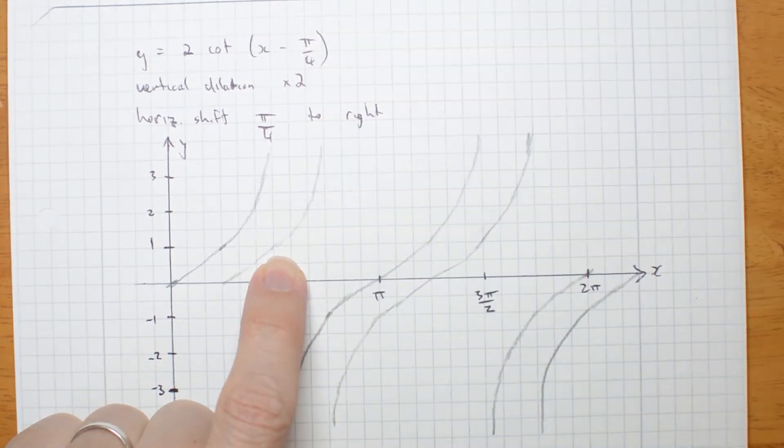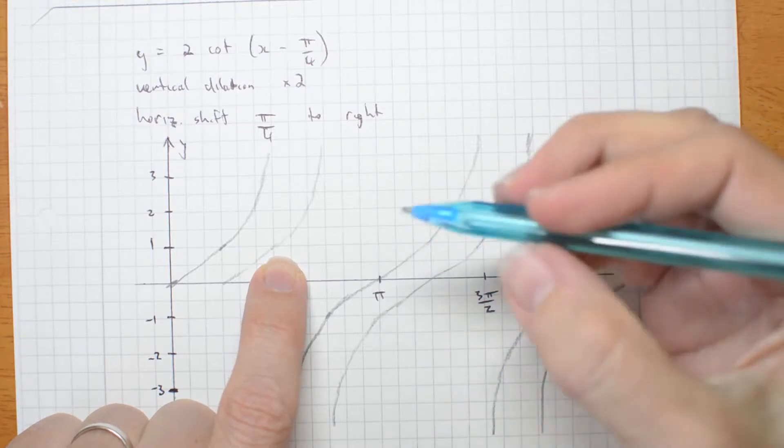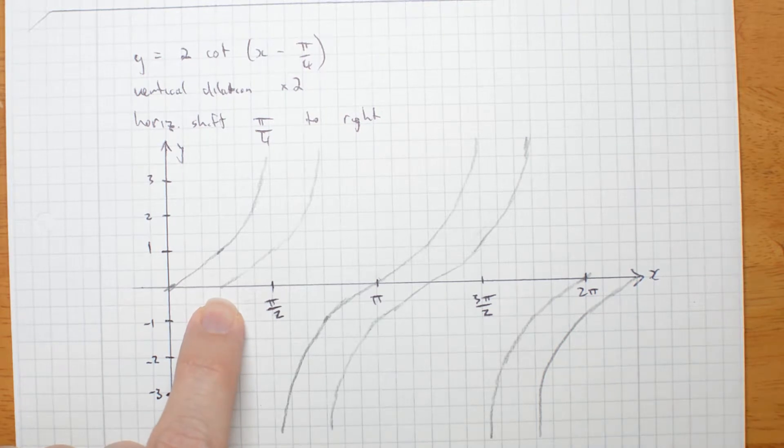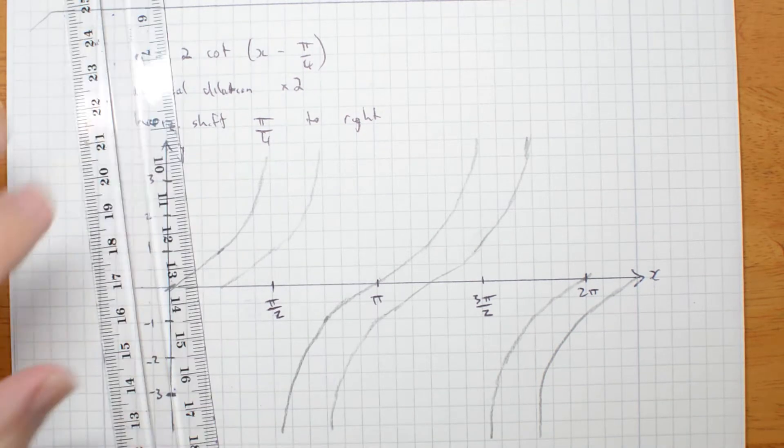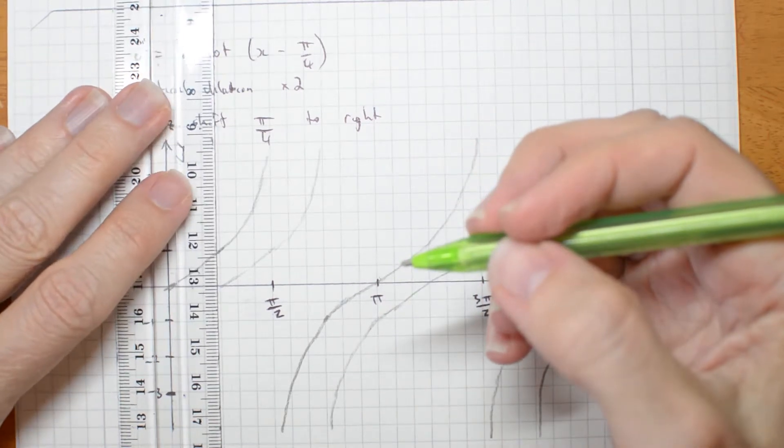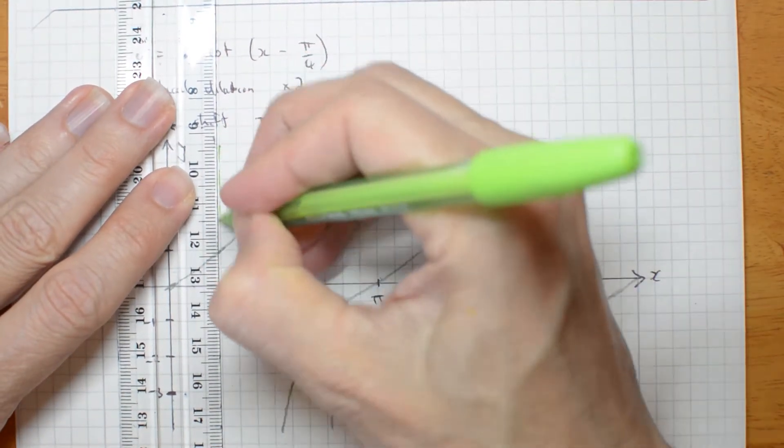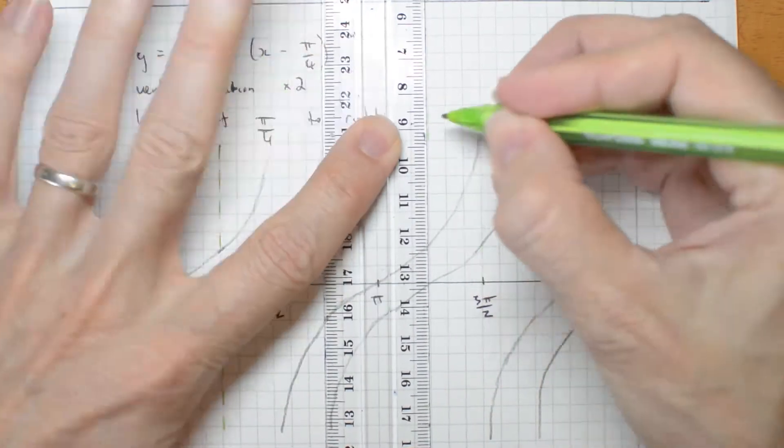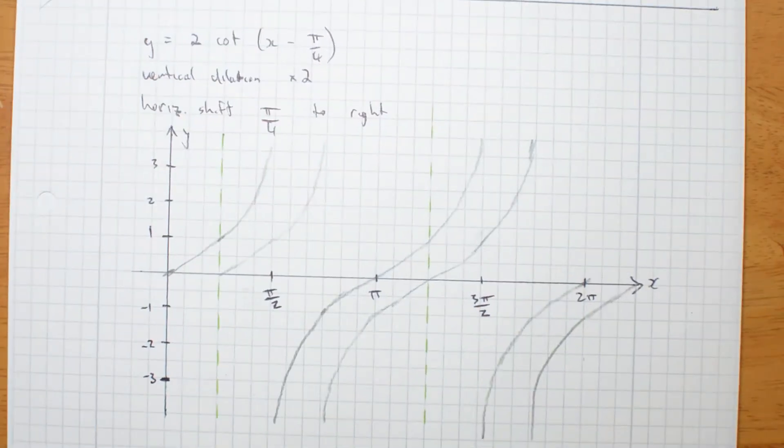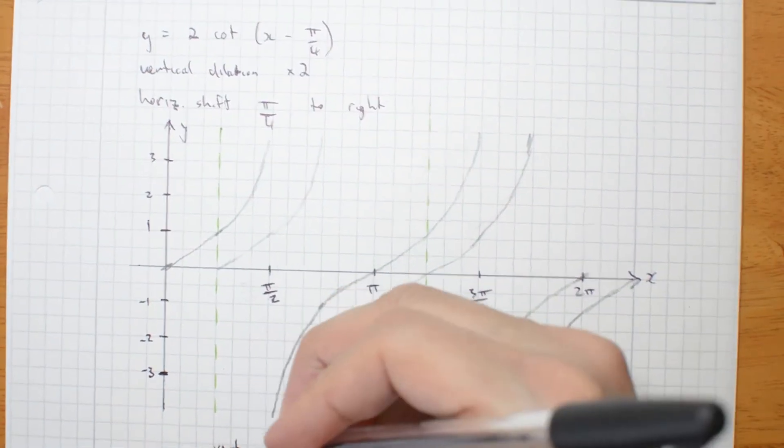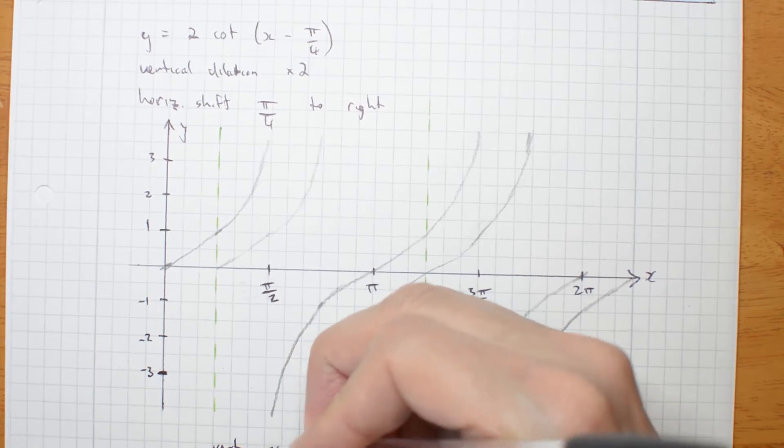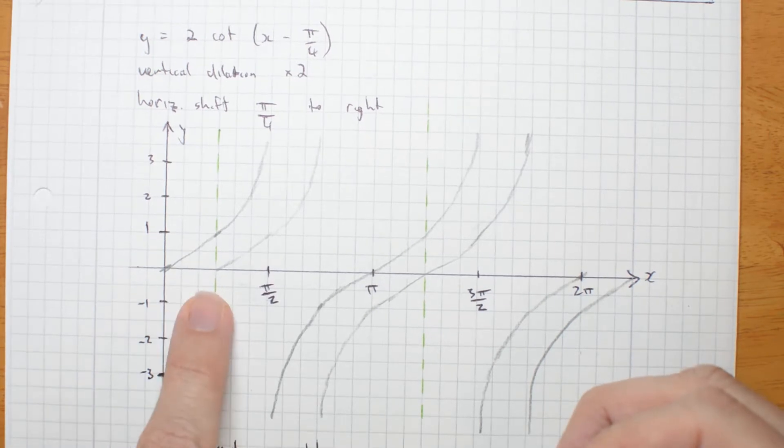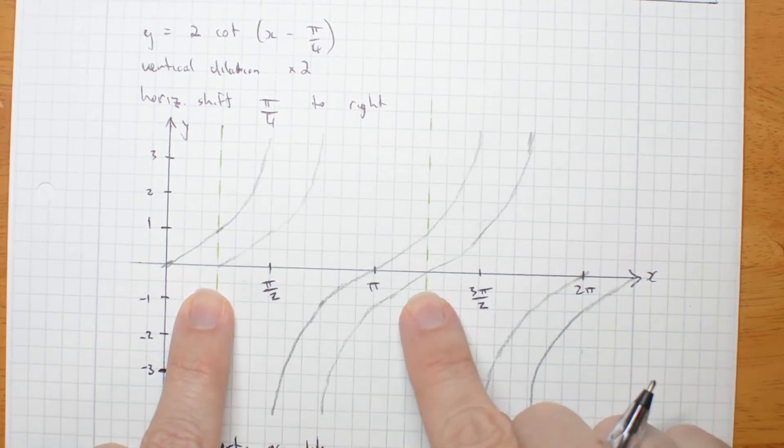How do I get to cot? Where tan is 0, cot is undefined. So that helps me find some asymptotes. There's one. And there's another. I have asymptotes. Vertical asymptotes. At x equals pi on 4 and 5 pi on 4.